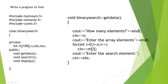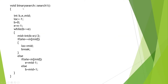The binary search function is defined as void binary_search::search_one. Here I declare the local variable b for the beginning of the array.